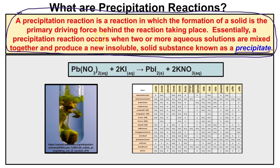Let's take a look at an example. We have lead(II) nitrate here — it says 'aq,' which means aqueous, meaning that this lead(II) nitrate has been dissolved in water.